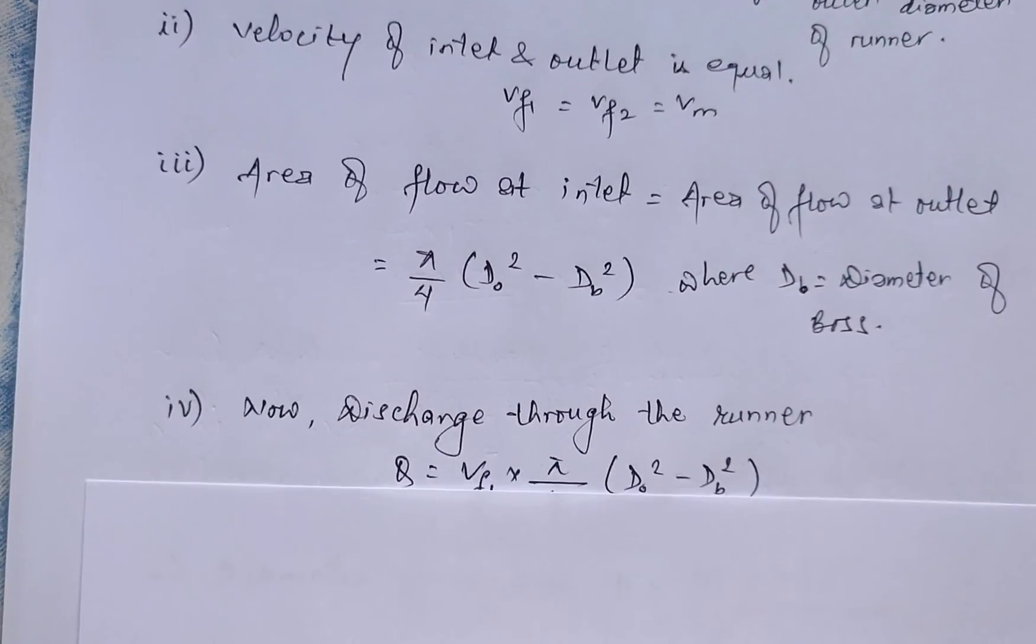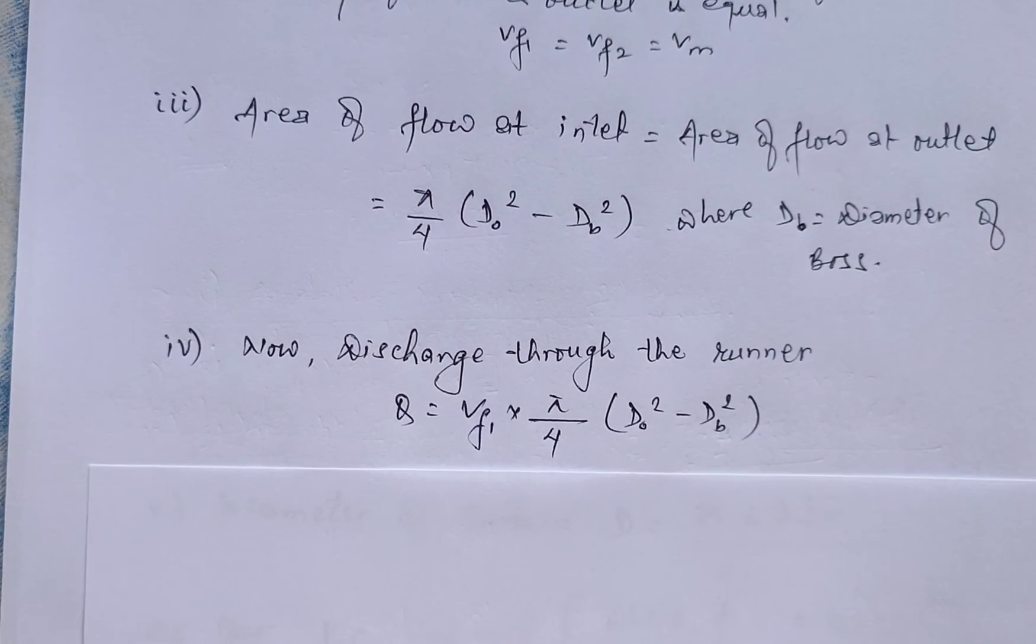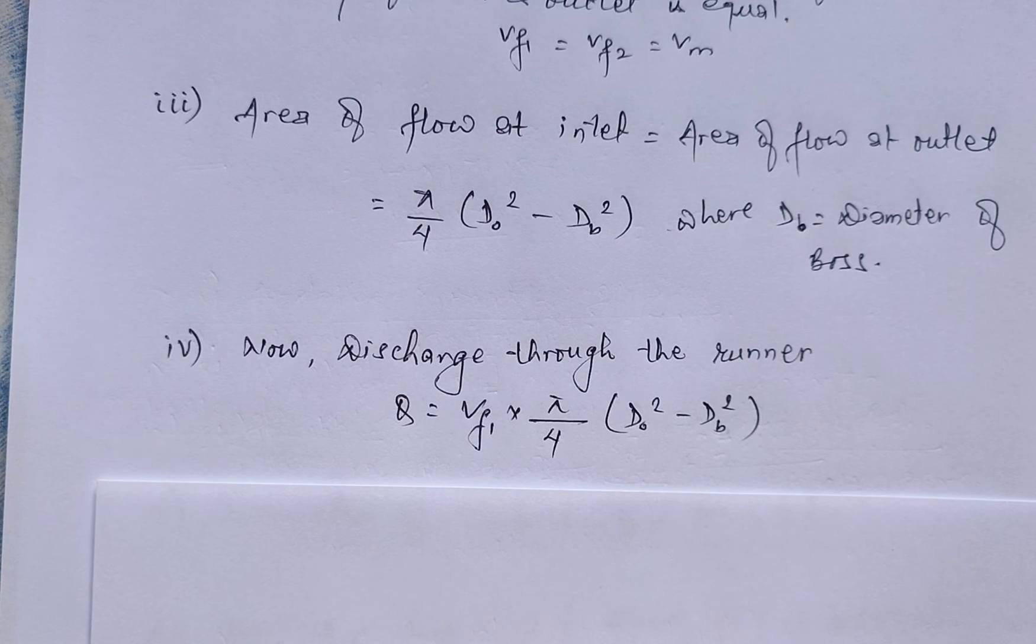Fourth, discharge through the runner can be calculated using Q = Vf₁ × π/4 × (D₀² - Db²).